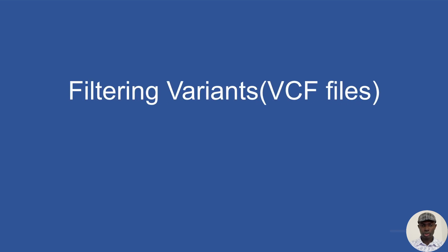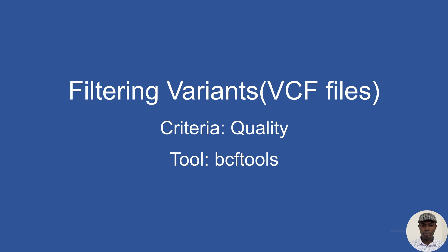Hi everyone, welcome to the Bioinformatics Coach channel. In today's video I'm going to show you how to filter variants. I'll read an example VCF file and filter it. For the criteria I'm going to use quality. There are different criteria available — you can filter based on quality, variant type, chromosome, etc. For this tutorial I'm focusing on quality, but in subsequent tutorials I will show you how to filter based on other criteria.